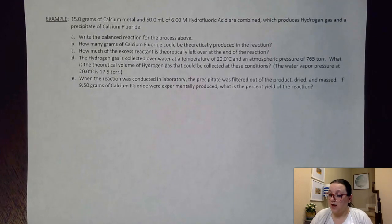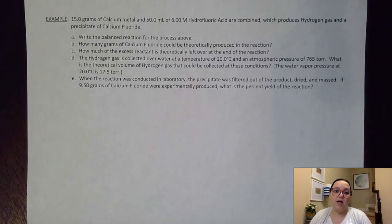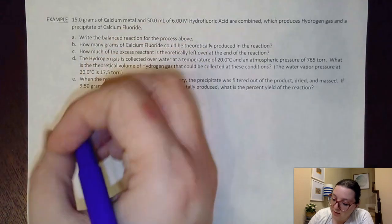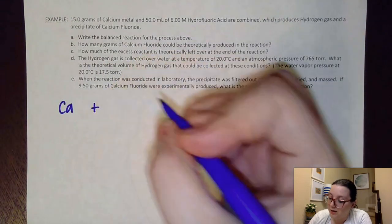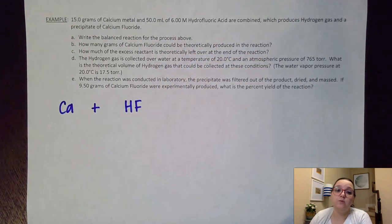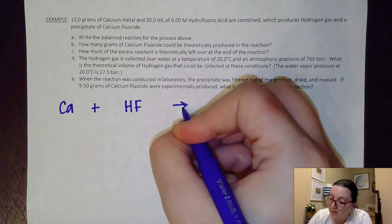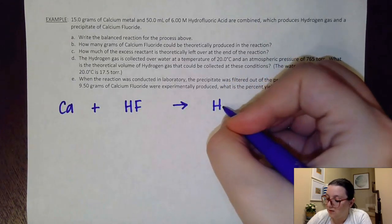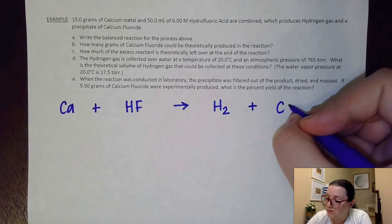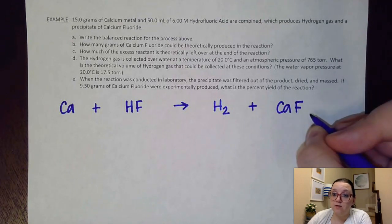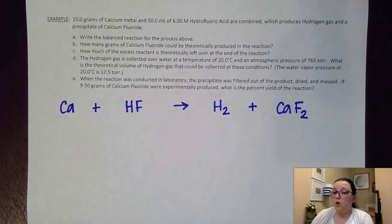The problem gives us some information about a reaction: we have 15 grams of calcium metal and 50 milliliters of 6 molar hydrofluoric acid, which combine to produce hydrogen gas and calcium fluoride. Part A asks us to write a balanced reaction. I have calcium — it's an element by itself but not diatomic, so I write Ca — plus hydrofluoric acid HF. Fluorine is negative one, so it only takes one hydrogen to balance it. That makes hydrogen gas, which is diatomic, so H₂, and a precipitate of calcium fluoride. Calcium has a charge of +2 and fluorine is -1, so that gives CaF₂.